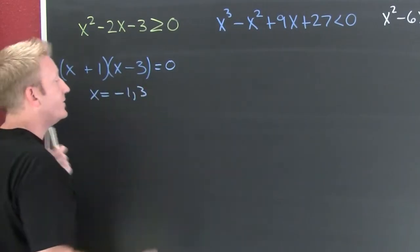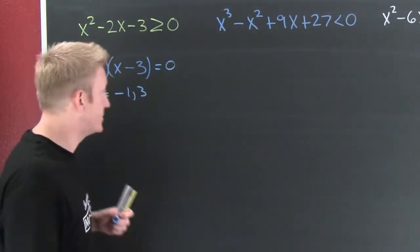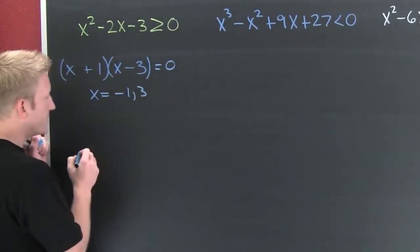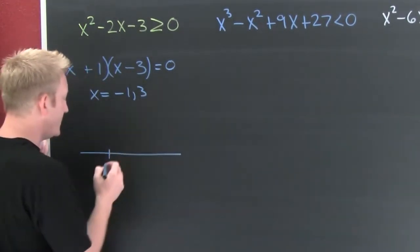Finish him. X is equal to minus one or three. If you want to see how we did that, check out the video on solving polynomial equations. So now these are my critical values. I'm going to put my critical values on a number line. This is minus one and that is three.